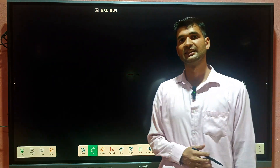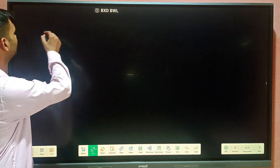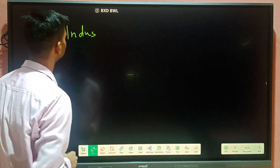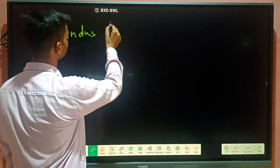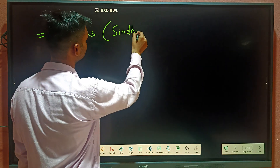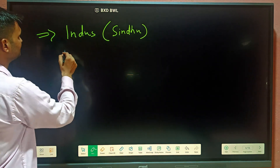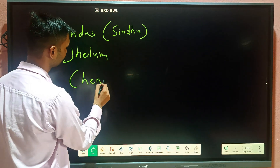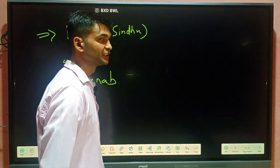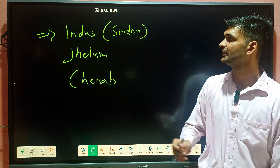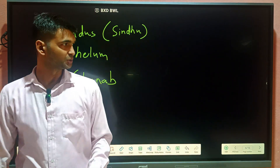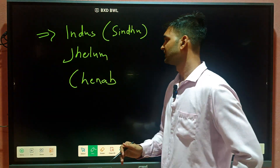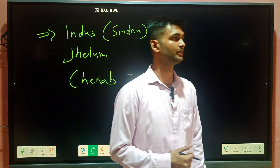Rivers that drain this area include the Indus, Jhelum, Chenab, Shyok River, and Gilgit River, which are tributaries of the Indus. These are the major rivers draining the Kashmir Himalayas. That covers the important features of Kashmir Himalayas.